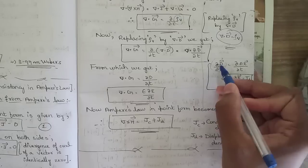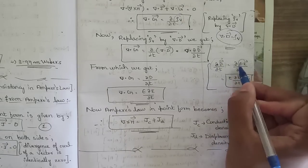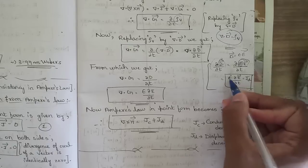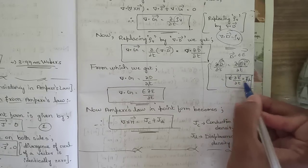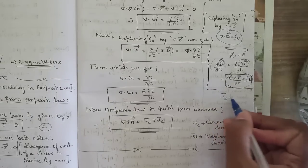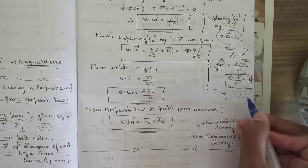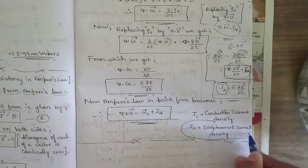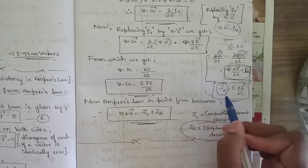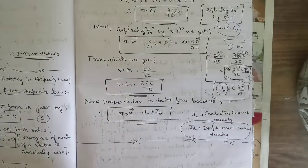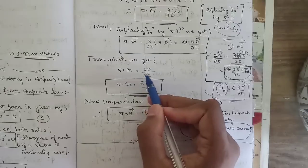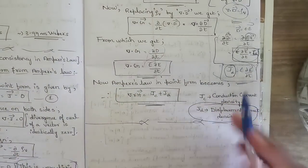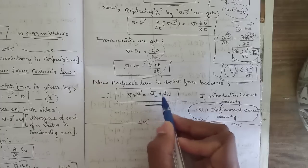This simplifies to ∇·G = ∇·(∂D/∂t). Since D = εE, we have ∂D/∂t = ε(∂E/∂t), so Jd = ε(∂E/∂t). This Jd is the displacement current density. Therefore, Ampere's law in point form becomes ∇×H = Jc + Jd, where Jc is conduction current density (Jc = σE) and Jd is displacement current density.